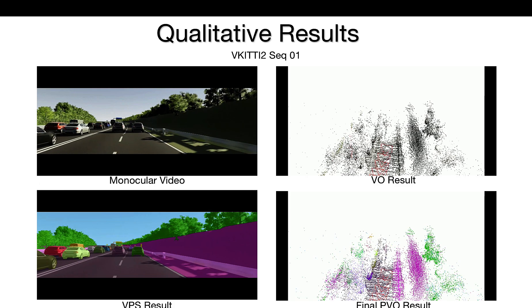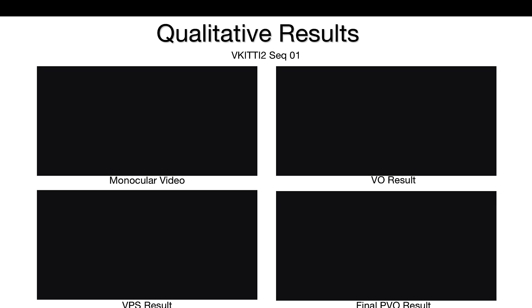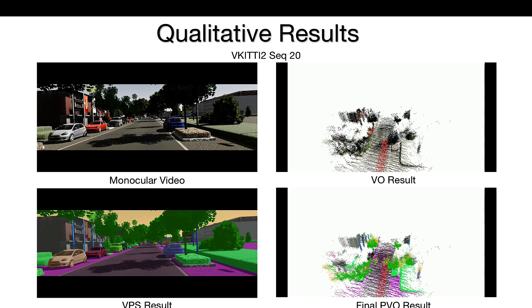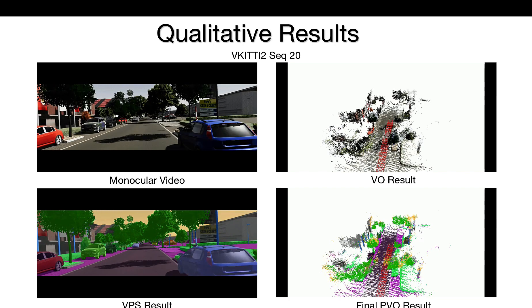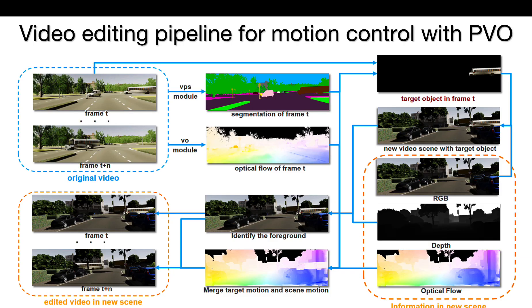Qualitative results on KITTI II Dataset 01 and Dataset 20 sequences are shown. We can also use segmentation and optical flow, depth, and pose results from the original video. Similarly, we can get full scene modeling information such as depth and optical flow in the new scene. We can select the target object and paste it into the new scene, merge the motion of the selected object from the original video with the new scene motion, and warp the target object into the next frame.